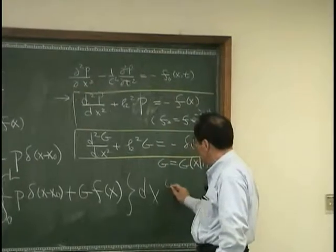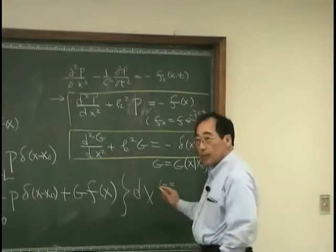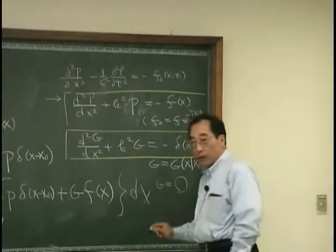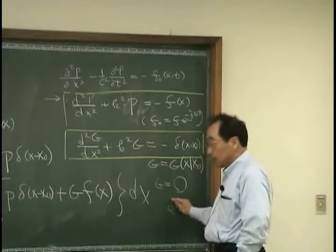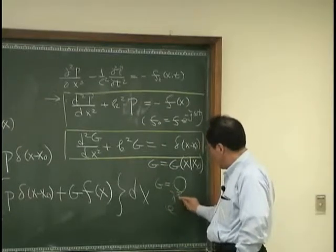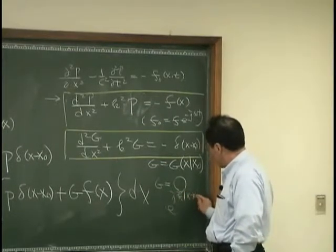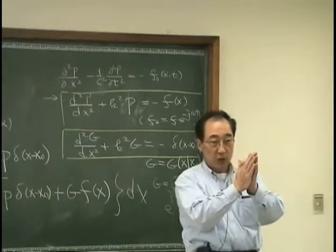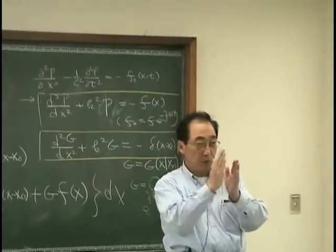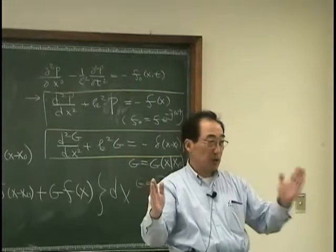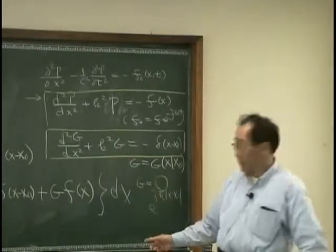And I know this G, in this case, is some coefficient and exponential, JK, X minus X zero, because I know that from X equal zero, when I impose it, the wave will propagate either this way or this way. Therefore, I have absolute base.